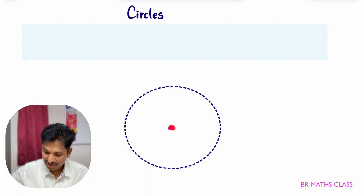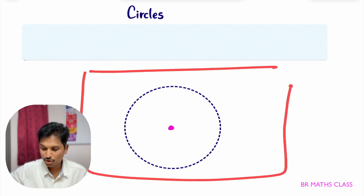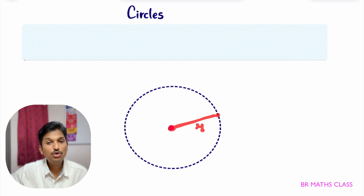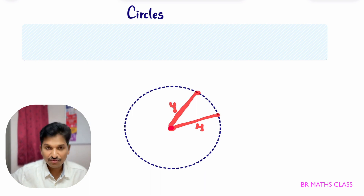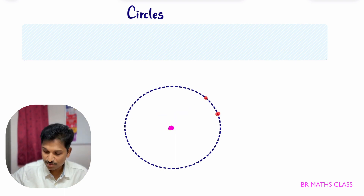Observe: there is a fixed point in the center. You take one fixed point. Now, you take all the points in a plane — a flat surface, anywhere on the board — such that they are equidistant from this fixed point. Suppose this distance is four units. You take one more point which is also four units away. If you take all such equidistant points and join them, what happens? You will get a circle.